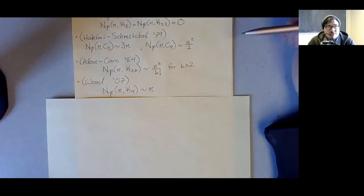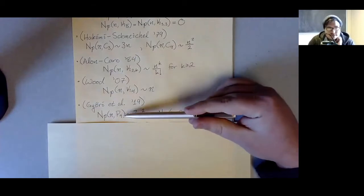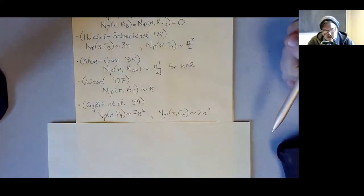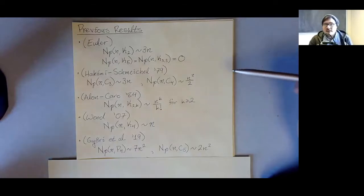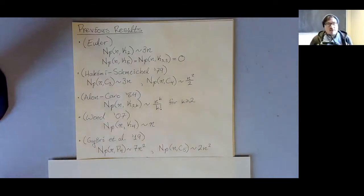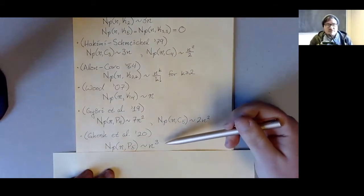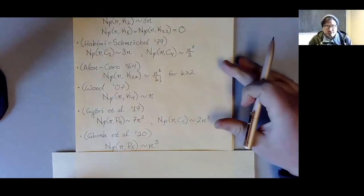A bit later, Alon and Caro generalized the four-cycle result and were able to get the maximum number of K_{2,k} for k at least 2, and also when k equals 1, which is the path on three vertices. More recently, Wood figured out the maximum number of K_4s in a planar graph. Just a couple years ago, Gyori and friends figured out the maximum number of paths on four vertices and the maximum number of five-cycles. All these results have exact answers, not just asymptotics.